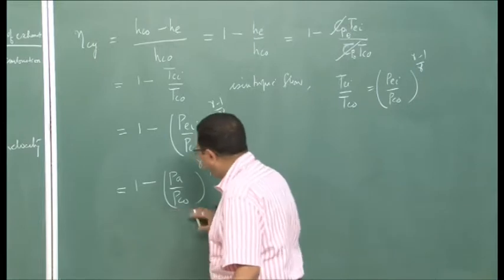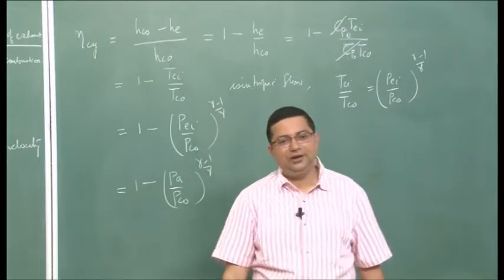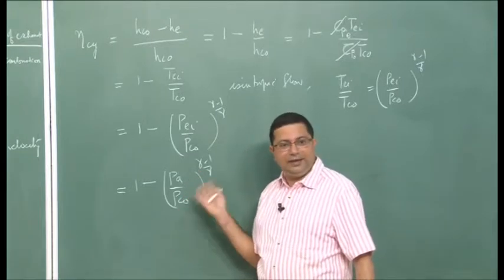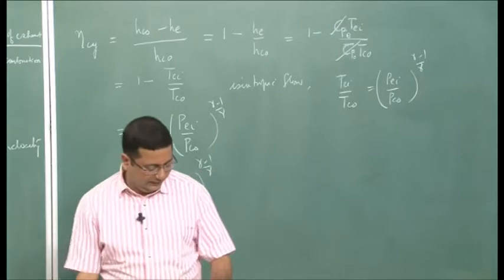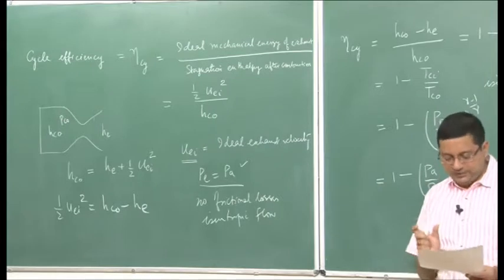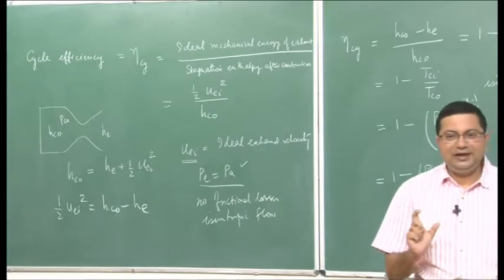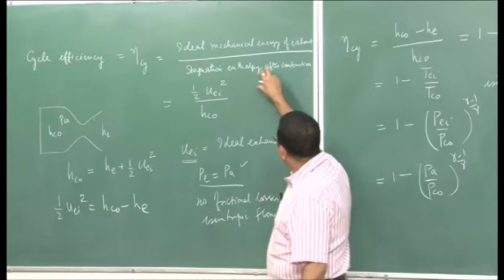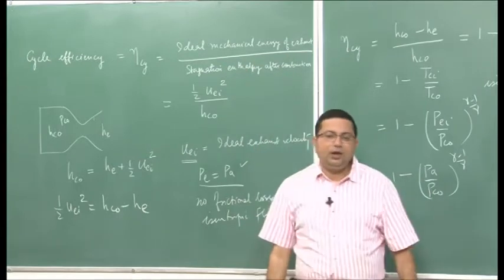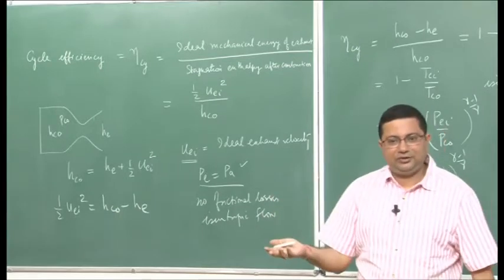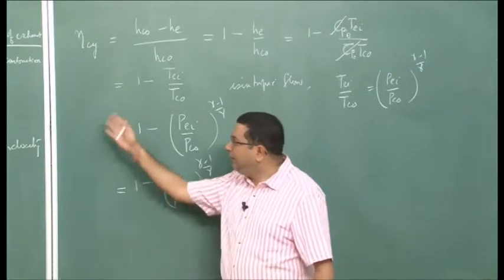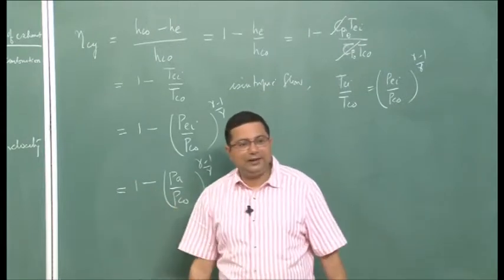For ideal expansion P_E = P_A, and ambient pressure is known, so we can replace P_Ei by P_A. The cycle efficiency then becomes: η_Cy = 1 - (P_A / P_C0)^((γ-1)/γ). As we can see, this is a function of the pressure ratio only. Cycle efficiency physically measures the fraction of energy produced by combustion that is used in thrust generation.